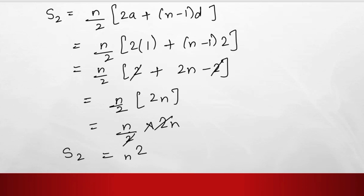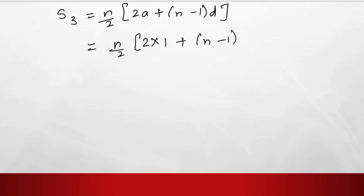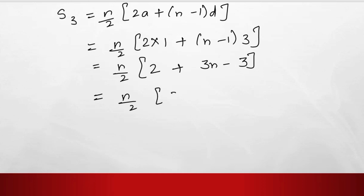Next we find the value of S3. S3 equals n upon 2 times (2A plus n minus 1 into D). Putting A equals 1 and D equals 3, we get n upon 2 times (2 plus 3n minus 3), which is n upon 2 times (3n minus 1). Opening the bracket gives 3n squared upon 2 minus n upon 2.